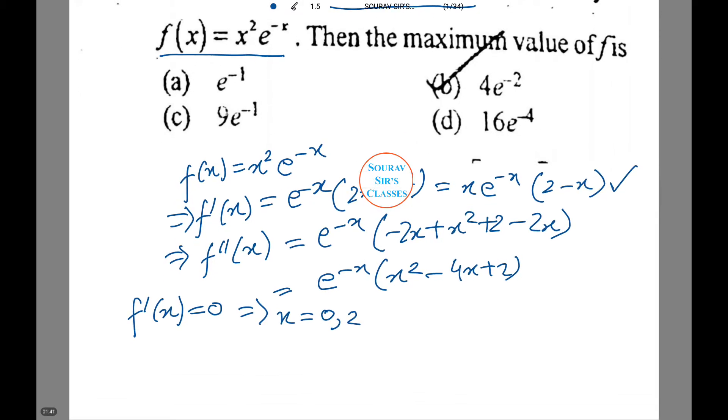Now we will check 0 comma 2 by putting these values in f double dash x. Therefore, f double dash 2 equals e to power minus 2 into minus 2, which is less than 0, which satisfies our question.